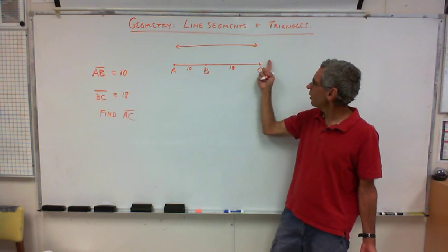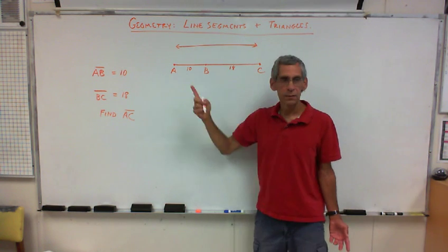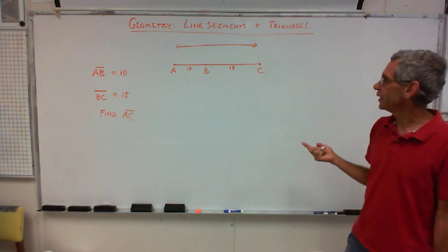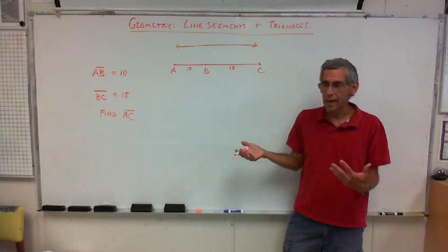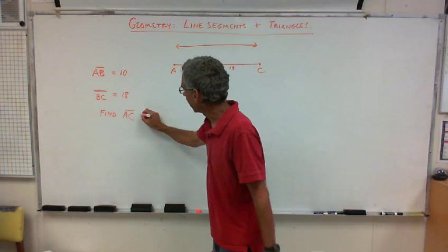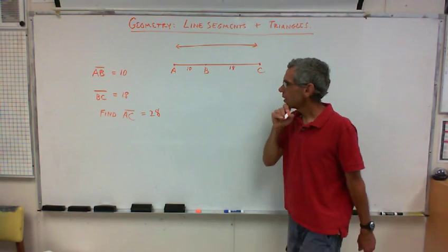Now, it's asking me to find AC. A, C. How long is this line? What is it? Say it loud. 28. How did you guys get it? 10. You just add them together, right? So, the whole thing, AC is equal to 28, exactly. All right.